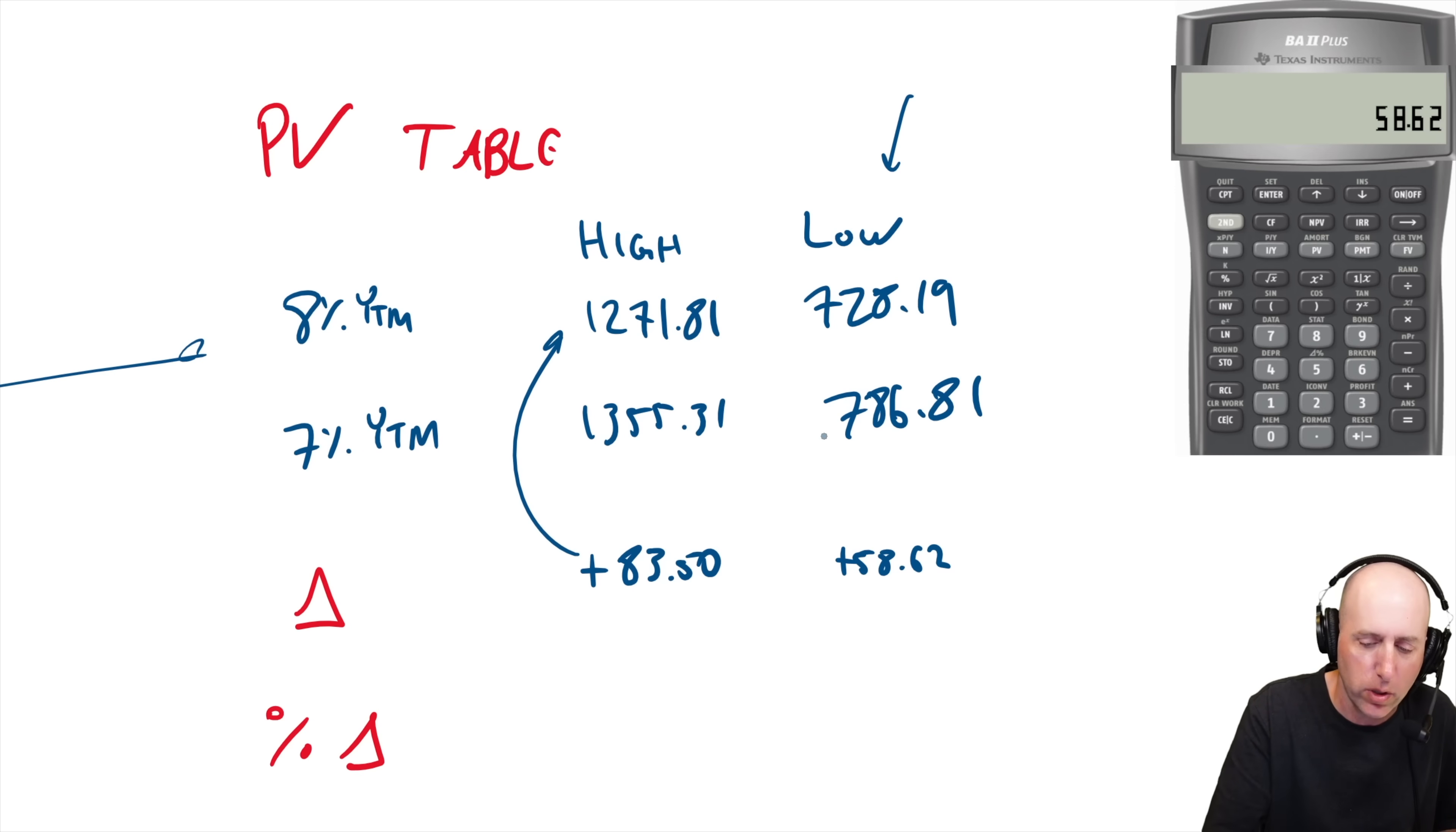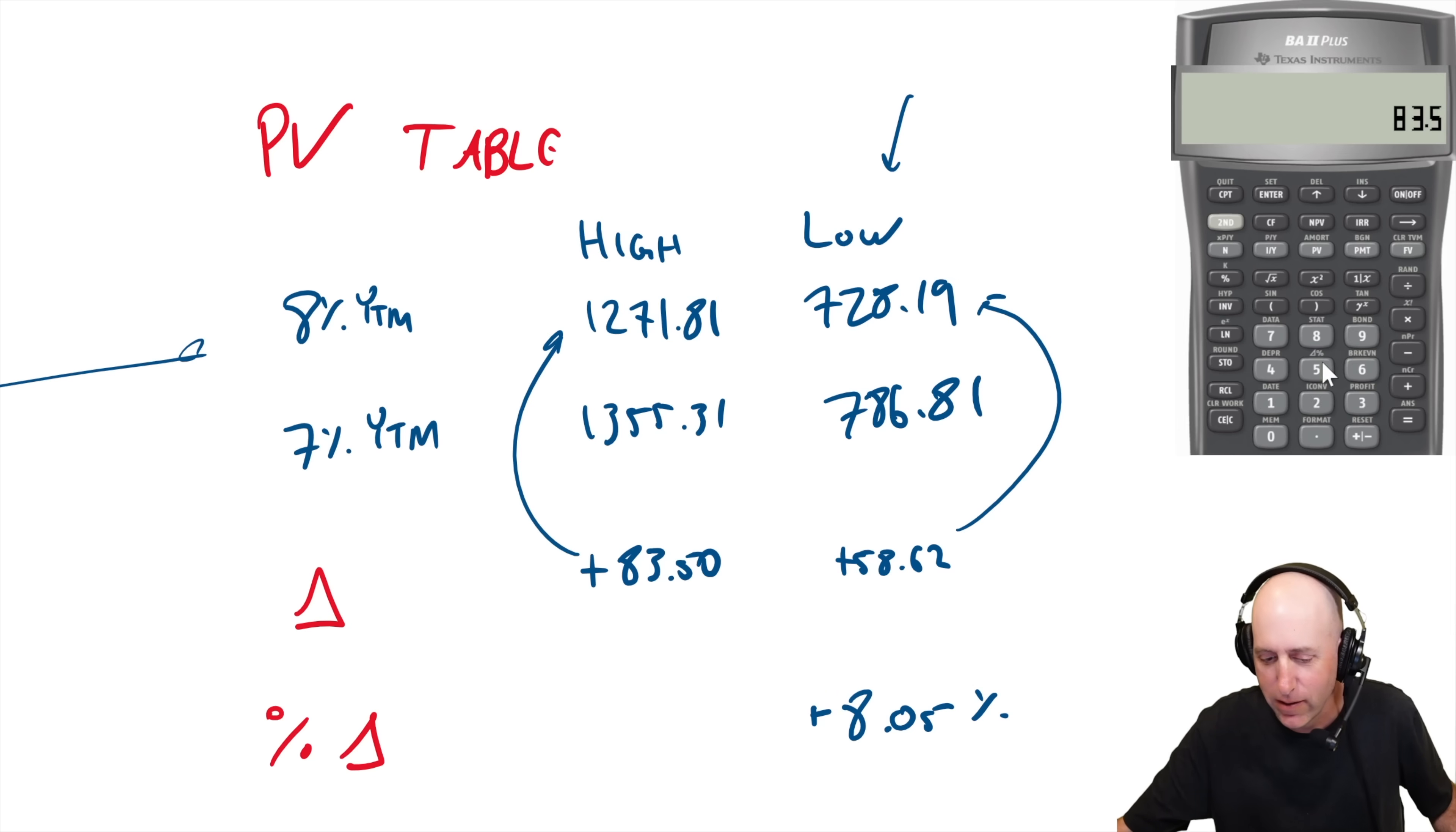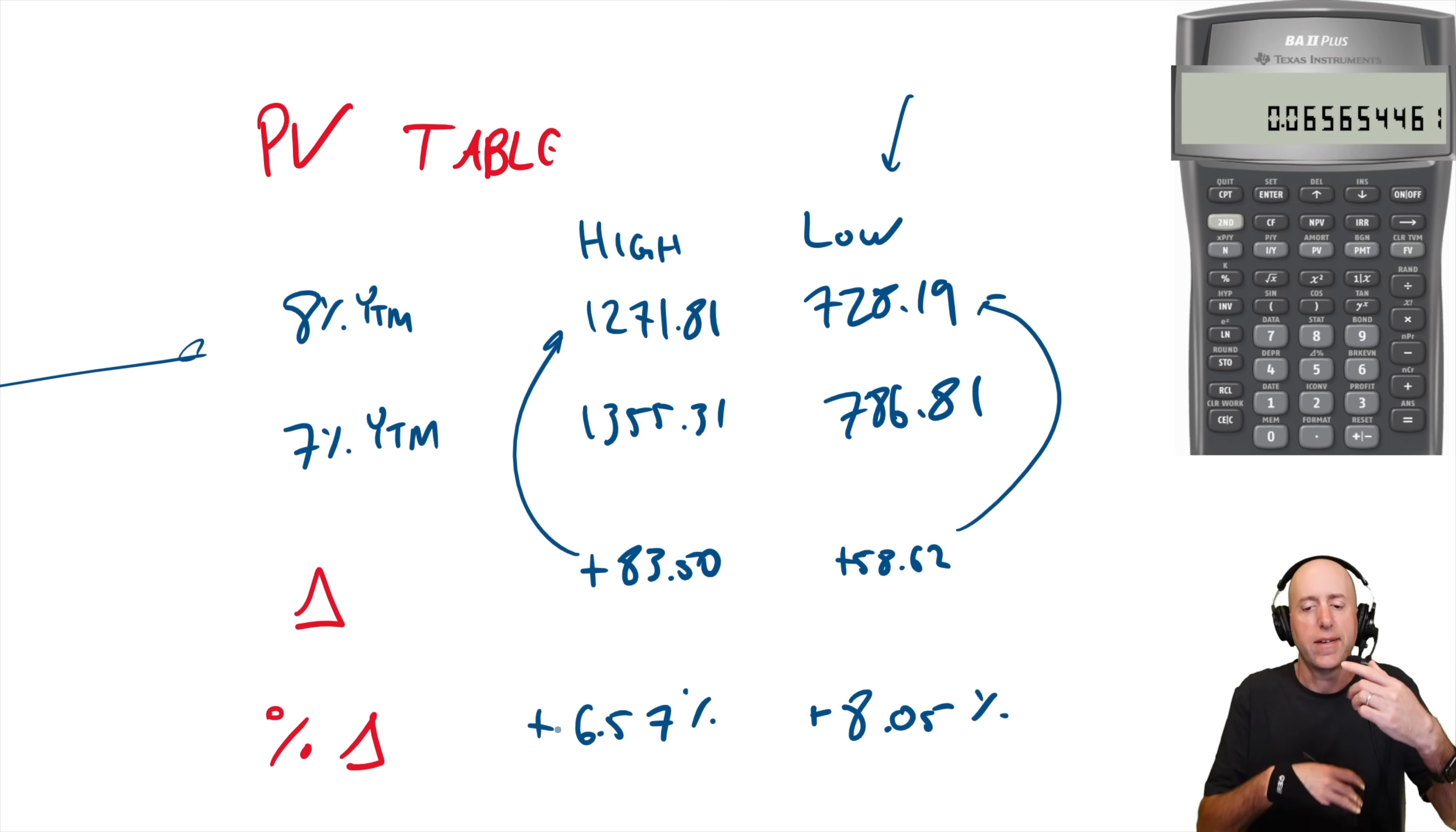What I should have said to be more precise was the percentage change is going to be higher. So let's see if that's true. You divide the change by the earlier of the two values. $58.62 divided by $728.19, I get 8.05% increase. $83.50 divided by $1,271.81, 6.56% or 6.57%. So it did follow kind of what we were expecting, which is the low bond is more impacted by an interest rate change than the higher rate bond.